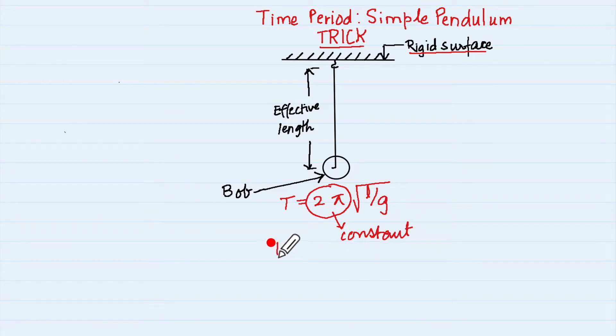And what are the variables? The variables are t, l and g. Time period will depend upon the length that is the effective length of the simple pendulum and it will depend upon the gravitational acceleration.